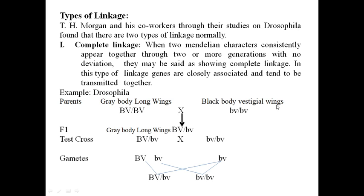Vestigial means degenerated, rudimentary, or a small remnant — that is called vestigial wings. When there is a cross between these two parents — grey body long wings Drosophila with black body vestigial wings Drosophila — we observe complete linkage in action.